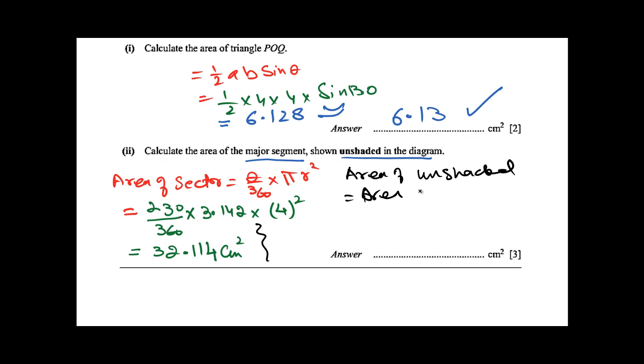Area of triangle plus area of sector: area of triangle is 6.128 and area of sector is 32.114.